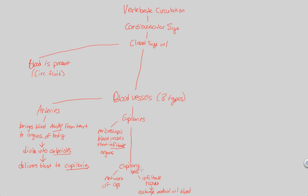After exchange at the capillary beds, capillaries merge together on the other side to form venules. To reiterate the pathway: arteries go away from the heart to the organs, branching into arterioles; exchange occurs at the capillary bed; then the capillaries branch into venules. Venules follow the route toward larger vessels known as veins.